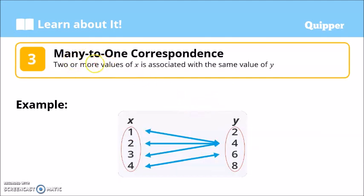We also have many-to-one correspondence. There are two or more values of X that are associated with the same value of Y. Again, not unique anymore, the same value of Y. So many values of X are mapped or associated to a single value of Y. So one-to-four, two-to-four, three-to-four, four-to-six. Take note that one, two, and three are all associated to a single value of Y, which is four. And we call that many-to-one.